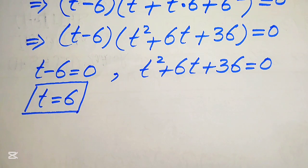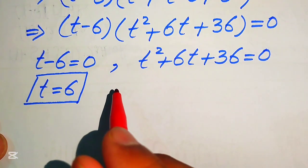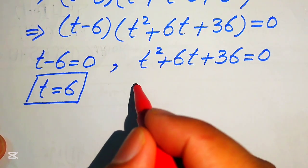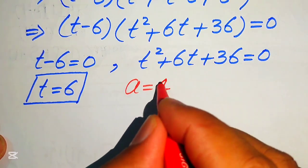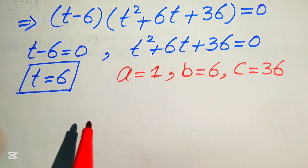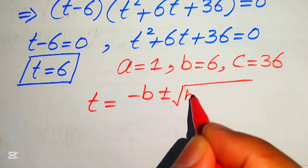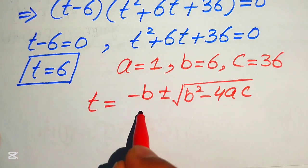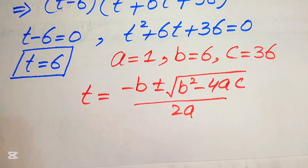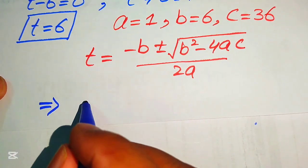To find the other solutions we solve the quadratic equation t squared plus 6t plus 36 equals to 0 using the quadratic formula. The coefficients are a equals 1, b equals 6, and c equals 36. The quadratic formula is t equals negative b plus or minus the square root of b squared minus 4ac, divided by 2a.